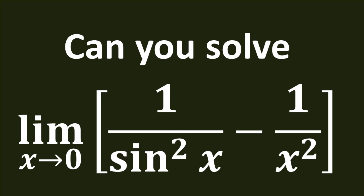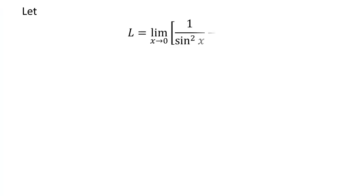In this video, we will learn to find the limit of 1 upon square of sin of x minus 1 upon square of x as x approaches 0. Let us assume L is the limit of 1 upon square of sin of x minus 1 upon square of x as x approaches 0.